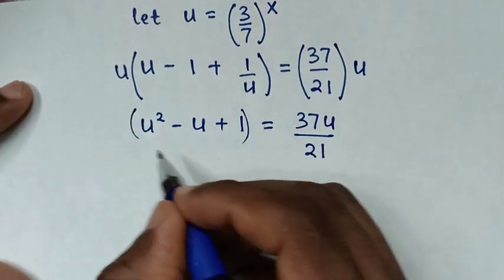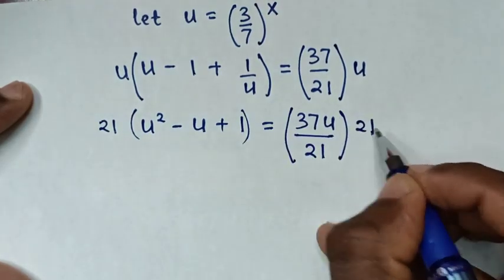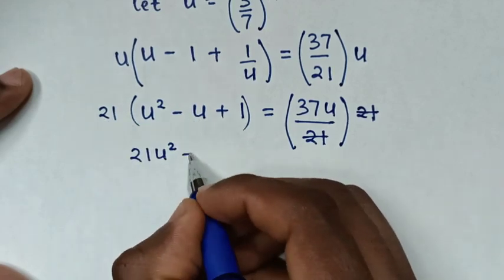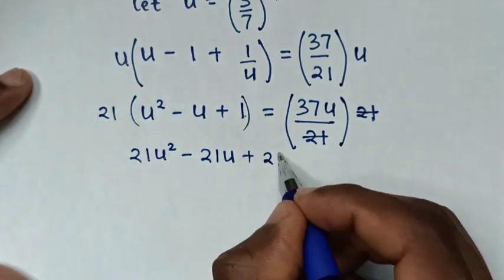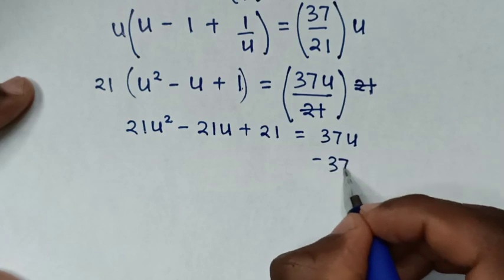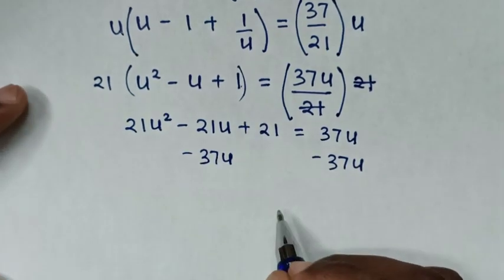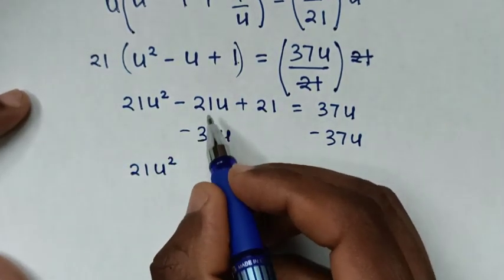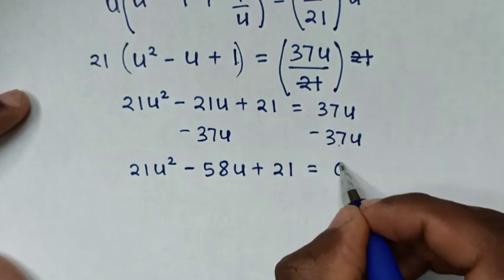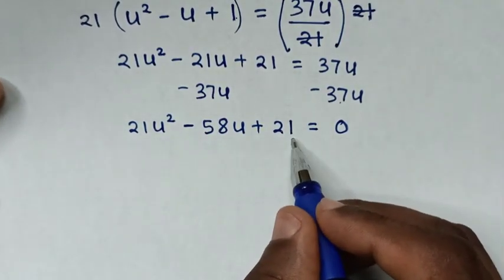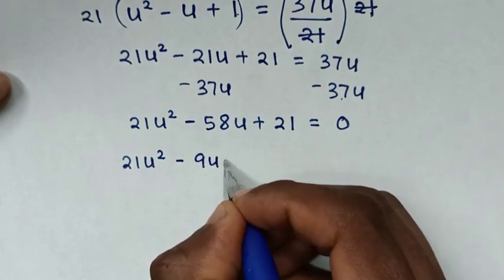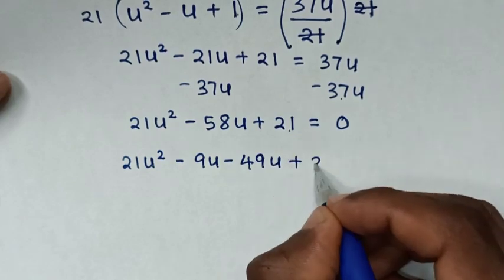Then to remove the denominator of 21, we multiply by 21 on both sides. This and this cancel. Then it will be 21u squared, then 21 times negative u is negative 21u, plus 21 times 1 is 21, is equal to 37u. Then to take 37u to the left side, we subtract 37u from both sides. Then our equation will be 21u squared minus 58u plus 21 is equal to 0.